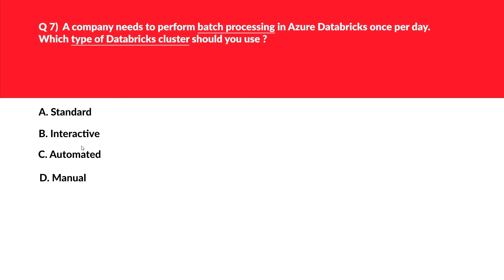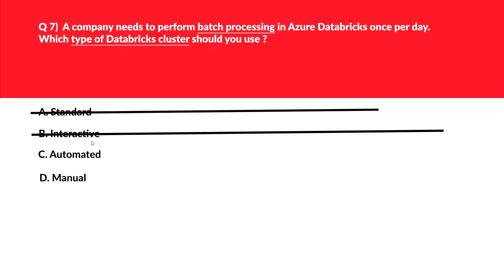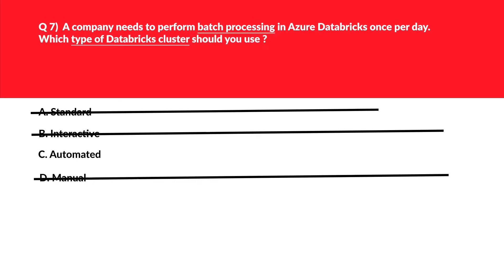This question is about Databricks. Options A and B — standard and interactive — are good for processing and querying data, but there's no mention of that here; it's about batch processing, so they won't work. Option C — automated jobs — are related to batch processing, so we'll keep this. Option D — manual cluster — there's no such thing as a manual cluster in Databricks; it's an absolutely invalid option. We'll reject this and lock C as the correct answer.